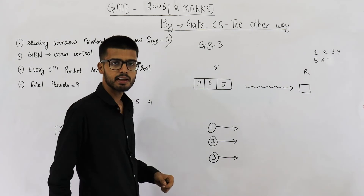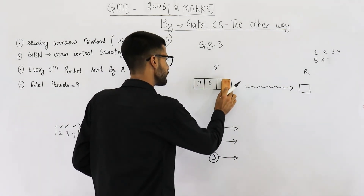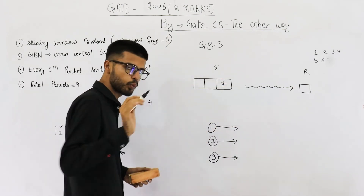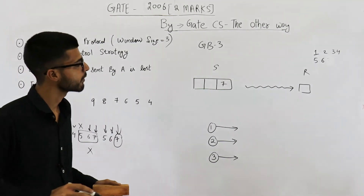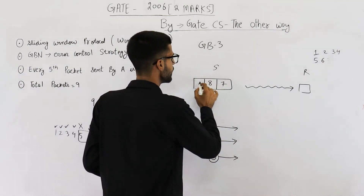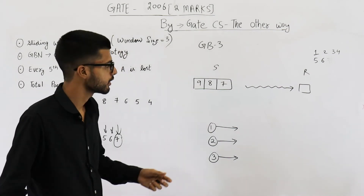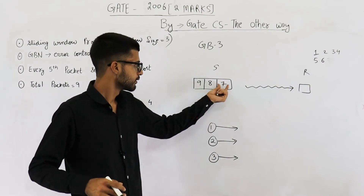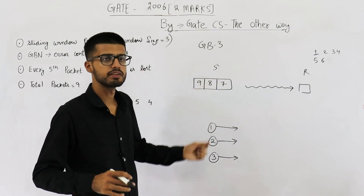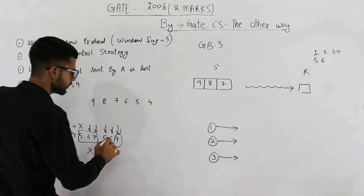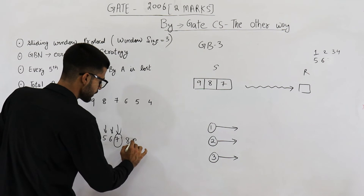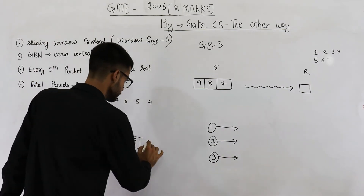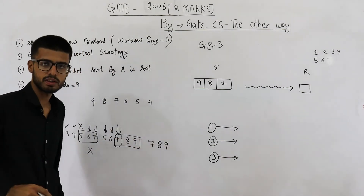When packet 7 is lost, in the window there will also be packets 8 and 9. The sender is waiting for acknowledgement of packet number 7, but it got lost. The receiver will discard both packets 8 and 9, and the entire window will be discarded again. So when 7th was lost, the window contents were 7, 8, 9 — we have to send this window once again. Packets 7, 8, 9 will be sent once again.